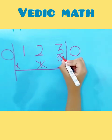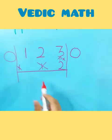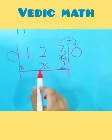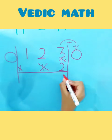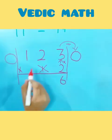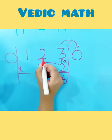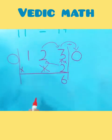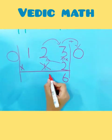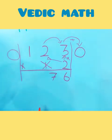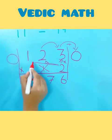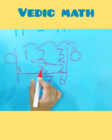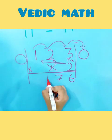First multiply 2 with the number 3: 2 times 3 equals 6, and add it with 0, so 6 plus 0 equals 6. Similarly, multiply 2 with 2, which equals 4. Now 4 plus 3 equals 7, so 7 is our next number. Then 2 multiplied by 1 equals 2, and 2 plus 2 equals 4, so 4 comes in the hundreds place.